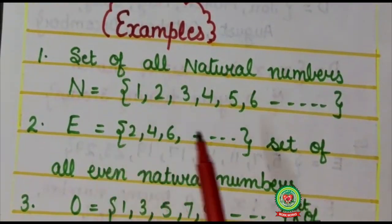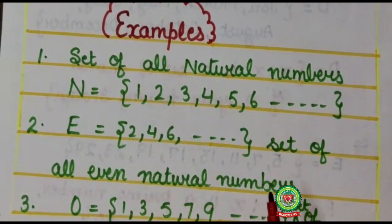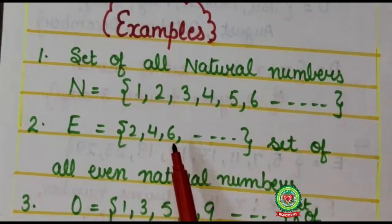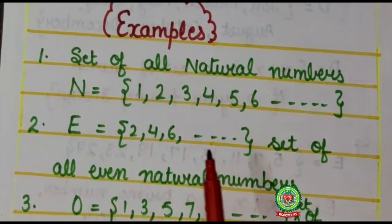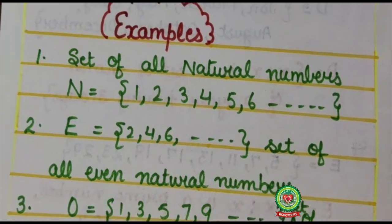Similarly, here capital E is a set of all even natural numbers, that is {2, 4, 6, so on}. Here so on dots represents that counting process will never come to an end.